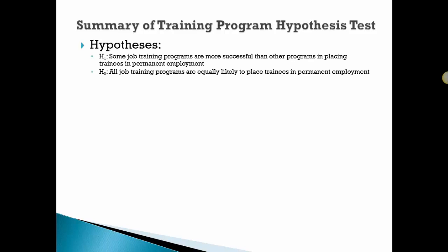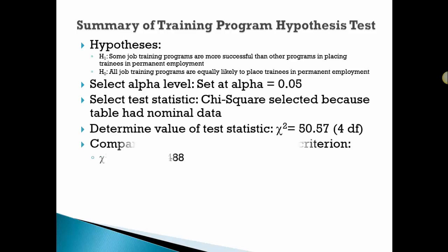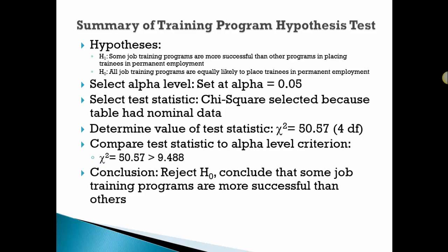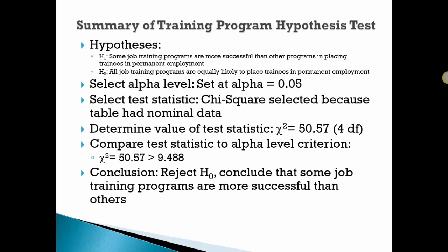Let's go back to the job training problem again to set out the steps. Here's the hypothesis: some training programs are more successful than others in placing trainees in permanent employment. The null is that they're all the same. Alpha level we selected was 0.05. We did a chi-square because we have nominal data. We got the test statistic. We compared it to the alpha level criterion. We concluded that some job training programs are more successful. But again, I remind you that we can't tell which one because there's no direction associated with the chi-square. We can only say they're not the same. Their placement levels are not the same.